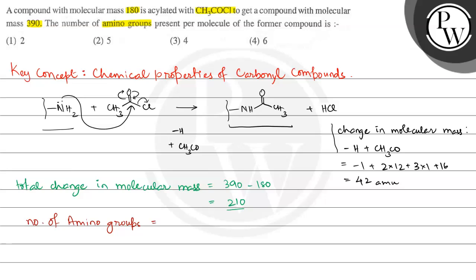Number of amino groups is equal to total change, that is 210, divided by change per one amino group, that is 42. And this is equal to 5. So the number of amino groups is 5 in the compound.